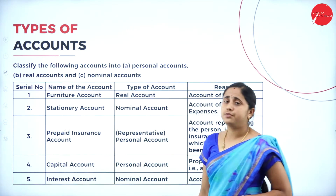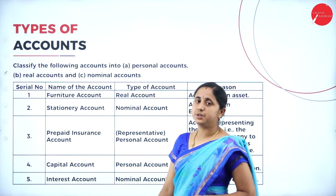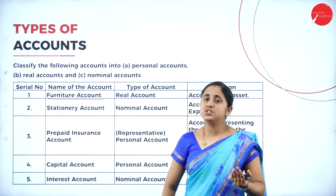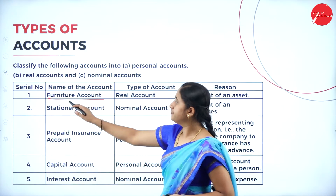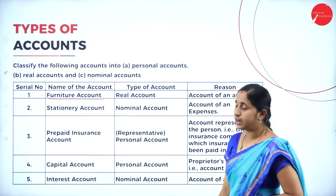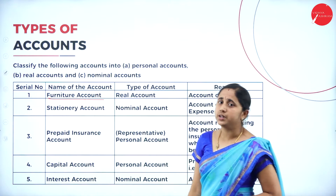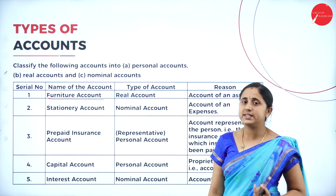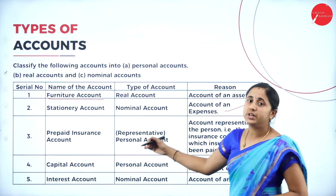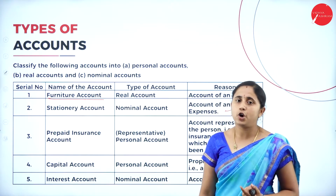Now, here is an example for the classification of accounts. You should be able to classify between personal account, real account, and nominal account. Furniture is an asset, and asset means real account — so furniture account is a real account. Reason: account of an asset. Next, stationery account is a nominal account. Why? Because when you purchase stationery, it is an expense for the organization — account of an expense. So it is considered as a nominal account.